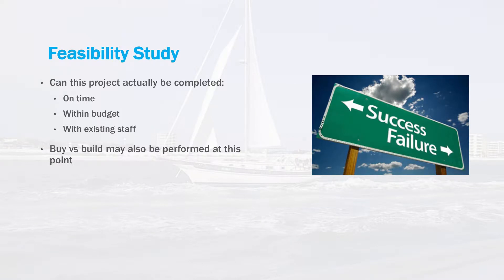The very first step in the process is the feasibility study. This process may be skipped for very small projects, but it can be a critical step for extremely large projects. In this phase, the project is looked at holistically to determine the general timeframe, the approximate budget, and the number of staff that will be required. Project staff will determine if the project can be fit into the existing company budget and resources. Staff may also determine if there's already software on the market that can be purchased or modified instead of developing a custom product. This is referred to as the buy versus build scenario.